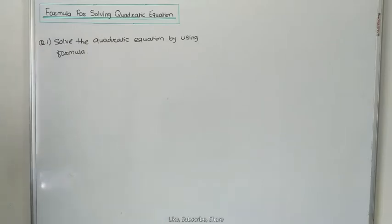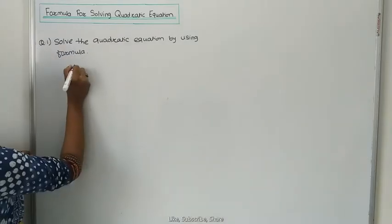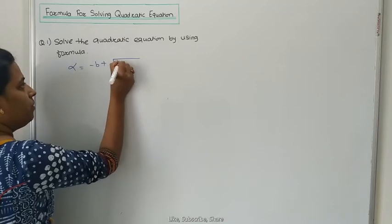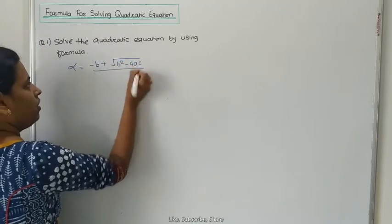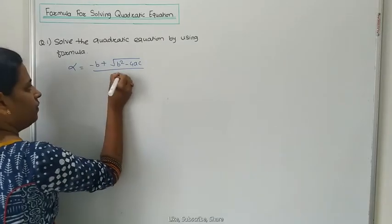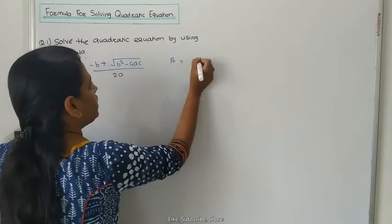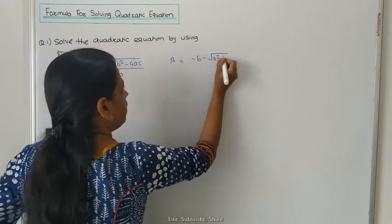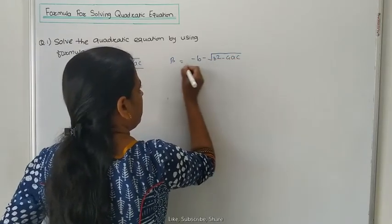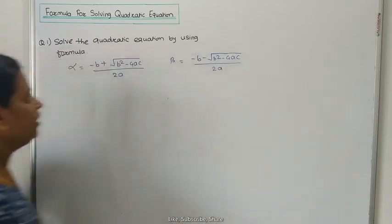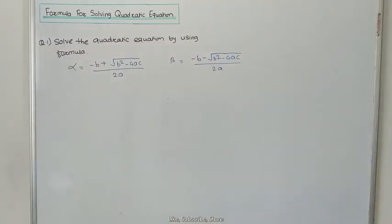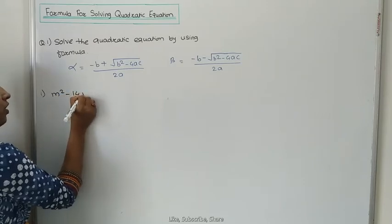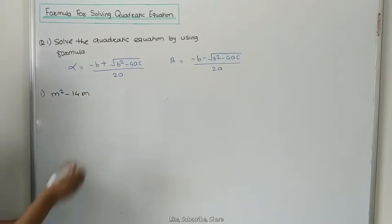What is the formula here? For alpha, we consider: α = (-B + √(B² - 4AC)) / 2A. And for beta: β = (-B - √(B² - 4AC)) / 2A. Now, we have to solve the first example: M² - 14M + 30 = 0.